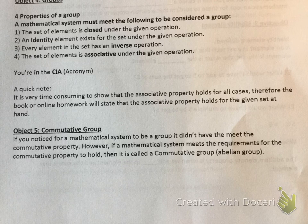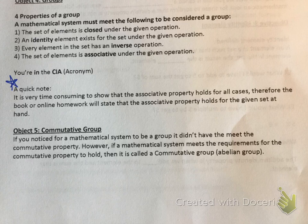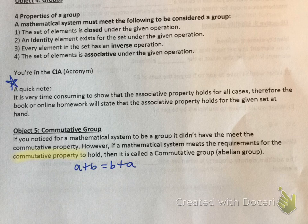Here's a quick note: it's very time consuming to show the associative property, so in the book and on the online homework it will state 'the associative property holds,' so you don't have to check that one usually. Objective 5 is talking about the commutative group. The commutative group has to meet all four properties to be a group, and then it also has to meet the property of being commutative — meaning we change the order and get the same thing: A plus B equals B plus A, or A times B equals B times A.